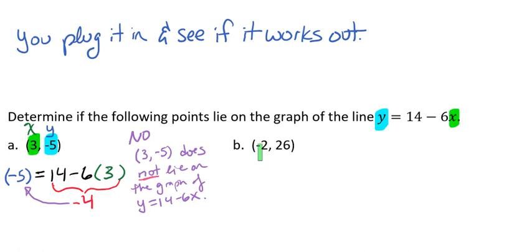Here we have our x value and our y value, and we're going to plug those in. So we'll have y = 14 - 6 times x. Here we have 26 for y and we're going to plug in -2 for x. It's going to work the same way.